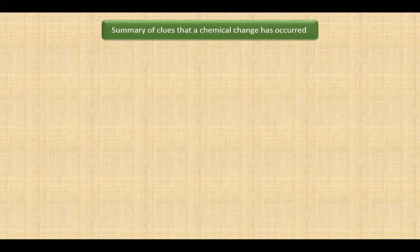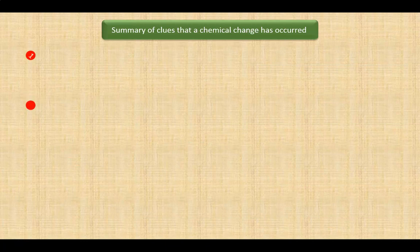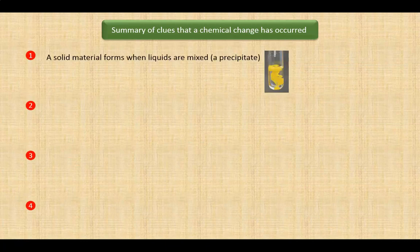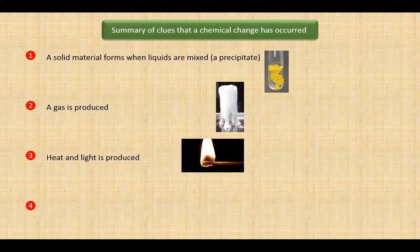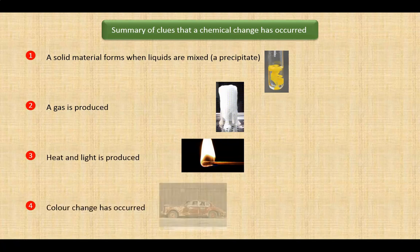Here's a quick summary of these four clues. First, a solid material forms when liquids are mixed. Second, if a gas is produced. Third, if heat and or light are produced. And fourth, if a color change has occurred.